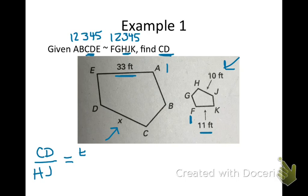So, EA, and line segment KF. So, if I put in the numbers, I would have the X, and I have the 10 from the smaller one, would be equal to the EA, which is 33, and the FK, which is 11.